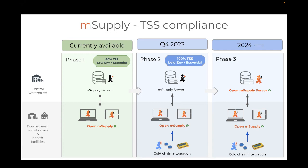On how HISP offices could work with mSupply alongside existing DHIS2 work, Craig said they're very open to experimenting and working with different countries to find where strengths lie and how to come together in a way that's good for the country. HISP offices have a lot of local knowledge and cultural competency in their countries, and mSupply would like to use that wherever possible while bringing specialist skills of the tools they work with. Having DHIS2 knowledge is extremely valuable as well.